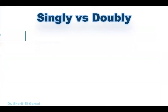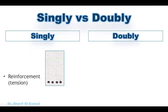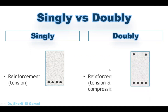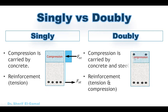Let's start by knowing the difference between singly and doubly reinforced concrete rectangular sections. For singly reinforced sections we have reinforcement only in the tension side. For doubly reinforced sections we have reinforcement in both the tension side and the compression side. In singly reinforced sections, compression is carried only by the concrete, whereas in doubly reinforced sections it is carried by both the concrete (Fcc) and the compression steel (Fsc). Tension in both cases is carried by the tension steel.